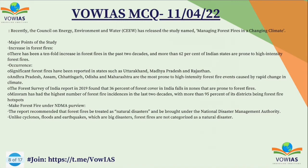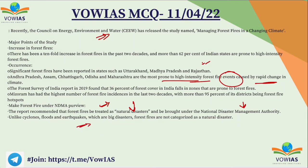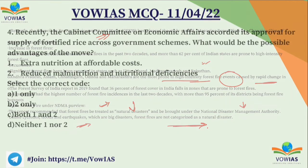The Council for Energy, Environment and Water recently released the report 'Managing Forest Fires in Changing Climate.' Key findings include increased occurrence of forest fires in states like Uttarakhand, Madhya Pradesh, Rajasthan, Andhra Pradesh, Assam, Chhattisgarh, Odisha, and Maharashtra — the most prone to high-intensity forest fire events caused by rapid climate change. The report also recommended that forest fires be treated as natural disasters and brought under the National Disaster Management Authority, unlike cyclones, floods, and earthquakes which are already categorized as natural disasters.